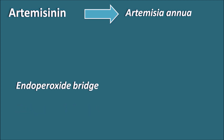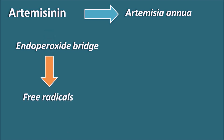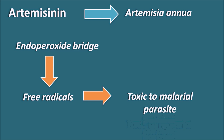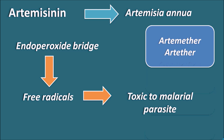Next is artemisinin, coming from the Chinese herb Artemisia annua. It contains an endoperoxide bridge, which when cleaved produces free radicals. These free radicals damage DNA and produce toxicity to the malarial parasite. Artemisinin is therefore used as a fast-acting anti-malarial. Artemether and artether are semi-synthetic analogues of artemisinin, also useful in the treatment of malaria.